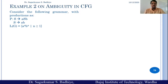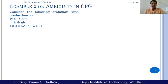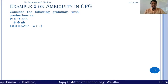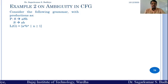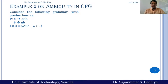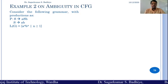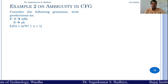Consider the following grammar with the production rules: s derives to asb, and s derives to ab, which is used to generate the language L(G) = {aⁿbⁿ | n ≥ 1}.